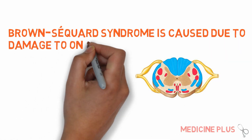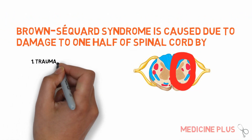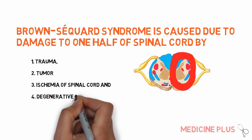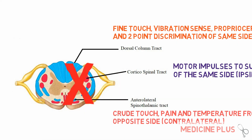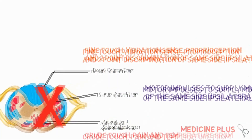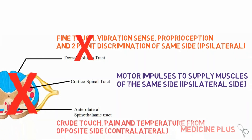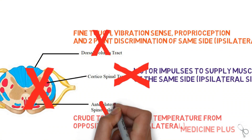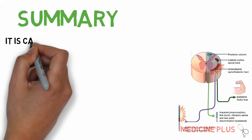Talking about the etiology of Brown-Séquard syndrome, it is caused by damage to one half of the spinal cord, due to trauma, tumor, ischemia of the spinal cord, or degenerative diseases. These lesions damage the dorsal column tract, corticospinal tract, and anterolateral spinothalamic tract, leading to partial to complete loss of their functions.